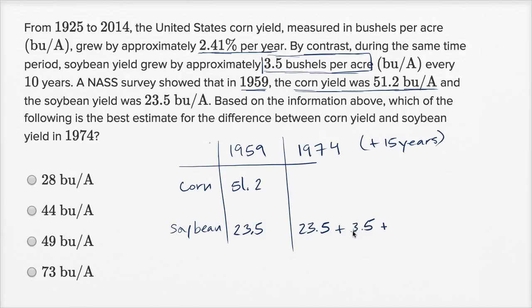Half of 10 years, well, it's going to grow by half of 3.5, which is 1.75. And so what is that going to be? Let's see, 23.5 plus 3.5 gets us to 27, and 27 plus 1.75 is 28.75 bushels per acre in 1974.